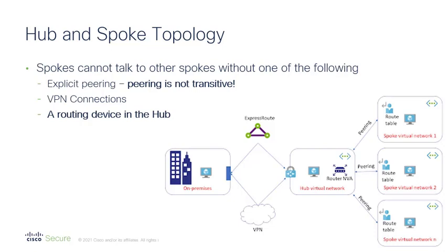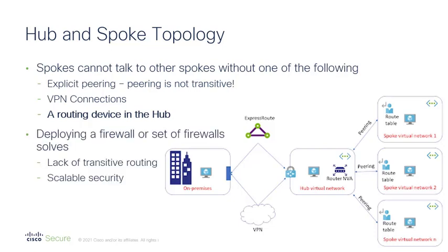What's that device? You might have guessed it's a firewall. This solves the problem of the lack of transitive routing, and it's probably what you want anyway, because you want traffic between the spokes to go through the firewall device. This gives you a scalable security solution for a hub-and-spoke topology.